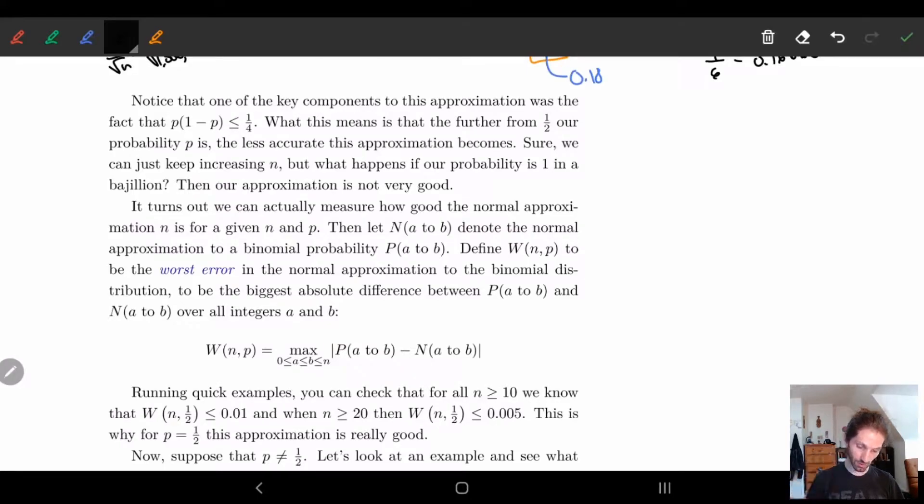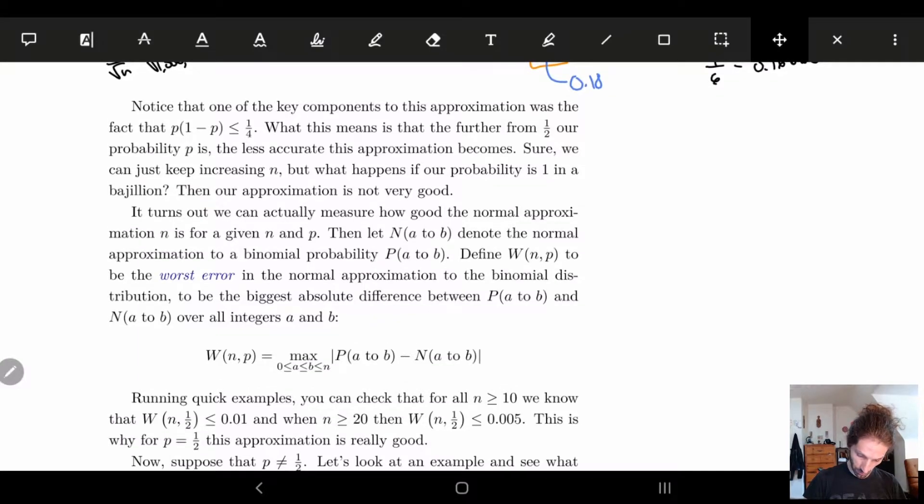What I mean here is that the main thing we used was this fact: p times (1 minus p) is less than or equal to one-fourth.